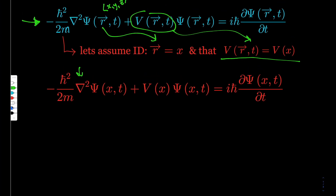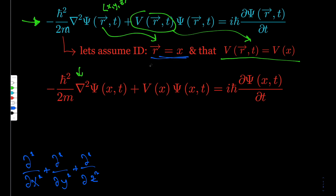I'm going to write the Laplacian first. The Laplacian is ∂²/∂x² plus ∂²/∂y² plus ∂²/∂z². In our case, because we only have the r-vector as a function of x, we only have the x-term. We've applied the assumption that the potential is only a function of x and applied this to all the wave functions.